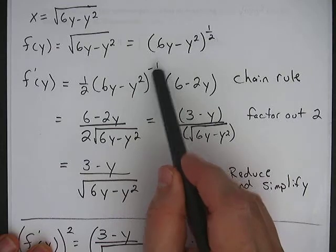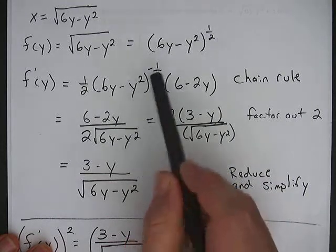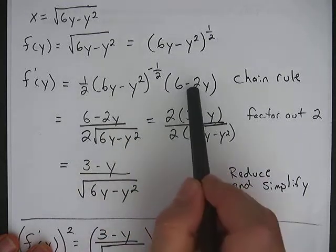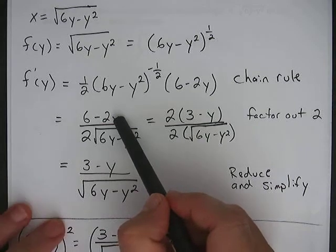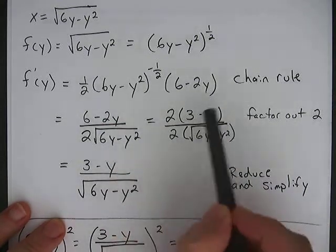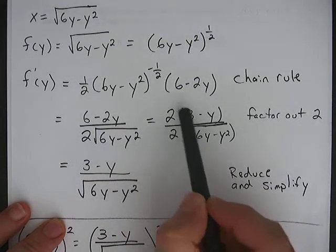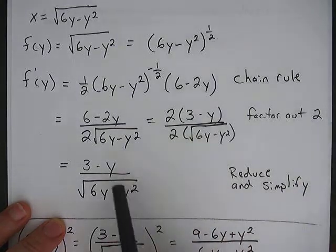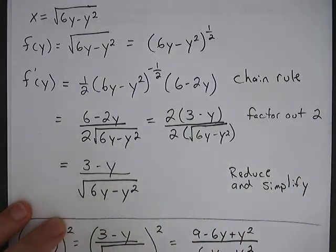this negative 1 half exponent means there's a square root on bottom, and the 1 half, there's a 2 on bottom, and this is going to stay on top in the numerator. On the next step, I factored out a 2 on the top, and then I reduced it. So this is f prime of y.